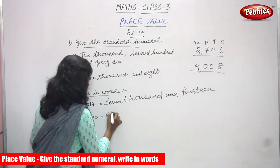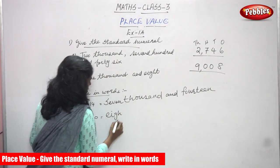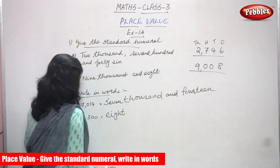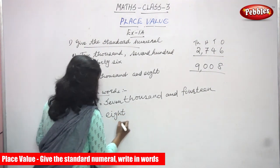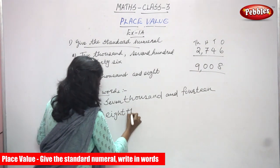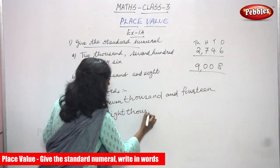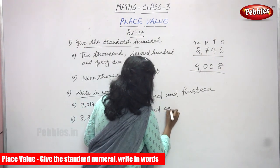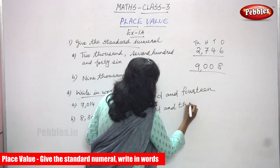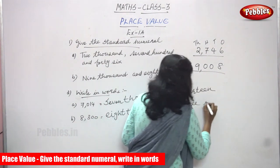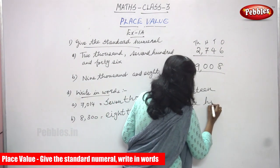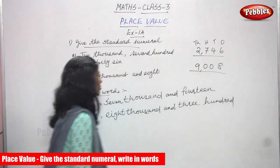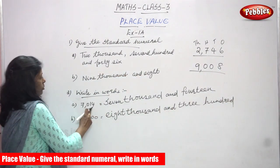Next is 8300. You have to write 'eight' (e-i-g-h-t) thousand (t-h-o-u-s-a-n-d) and 'three hundred.' Eight thousand and three hundred — that is the right answer for this question.